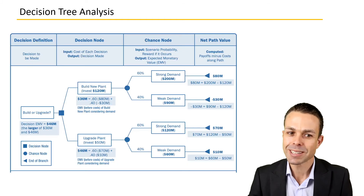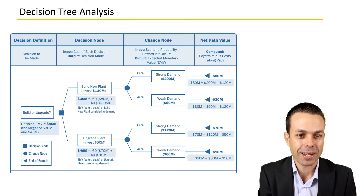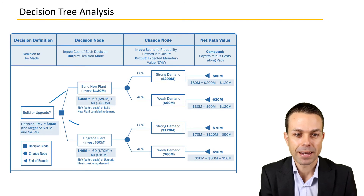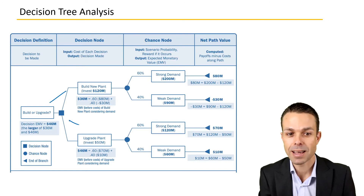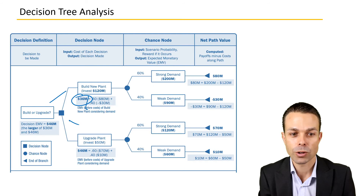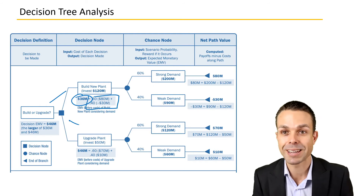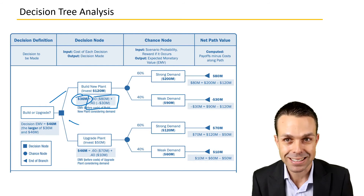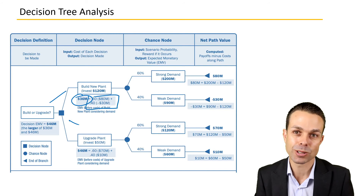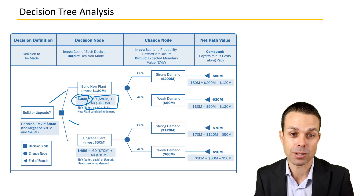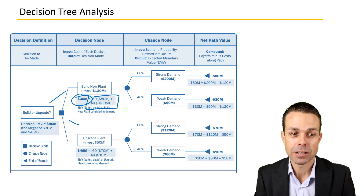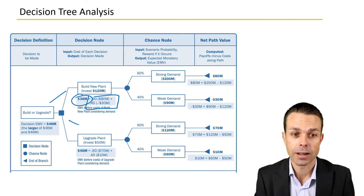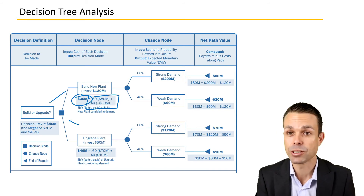Here is an example of what that looks like. As you can see, we've got the different branches of the tree, and each one has a cost associated with it, and also potentially the probability and impact of the risks associated with that decision path.